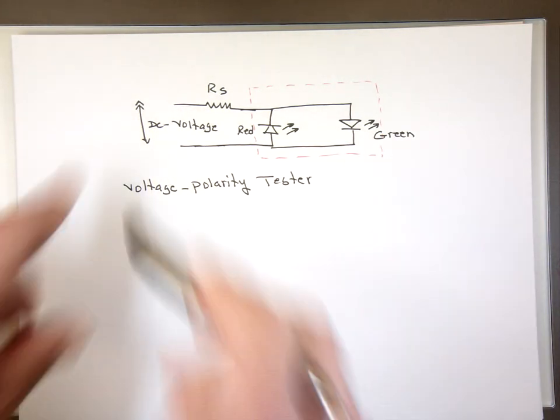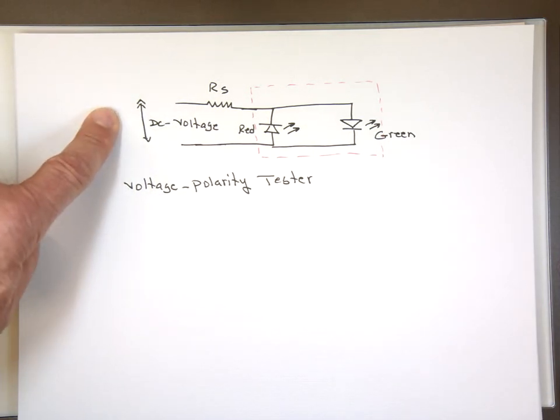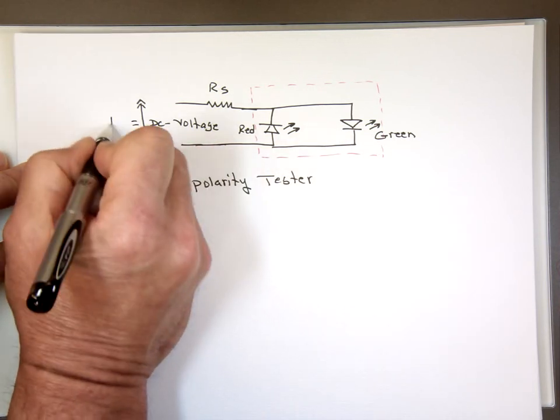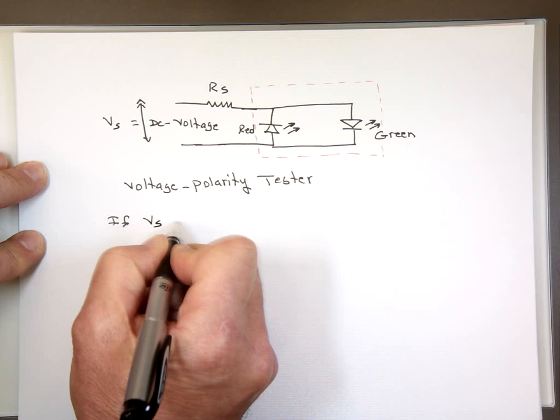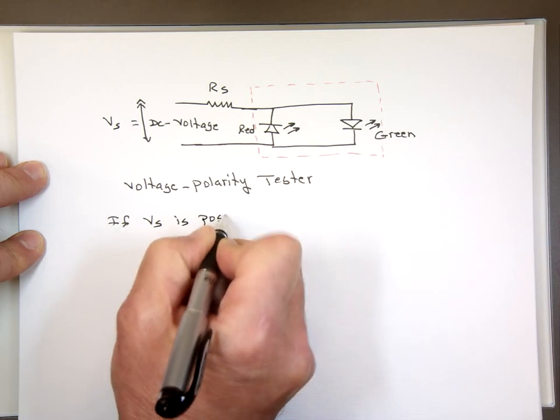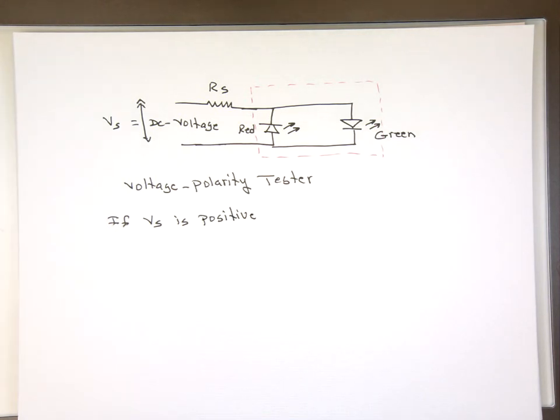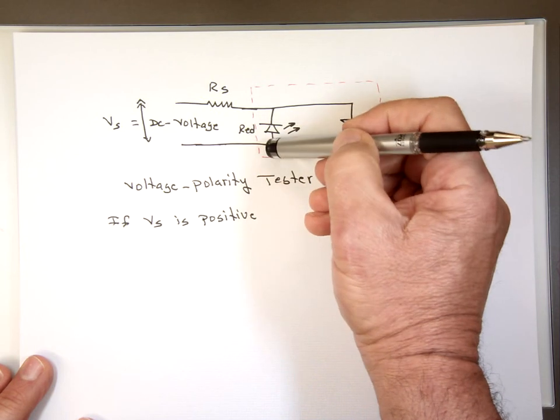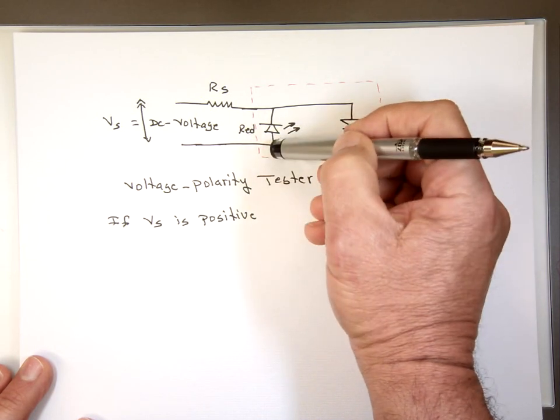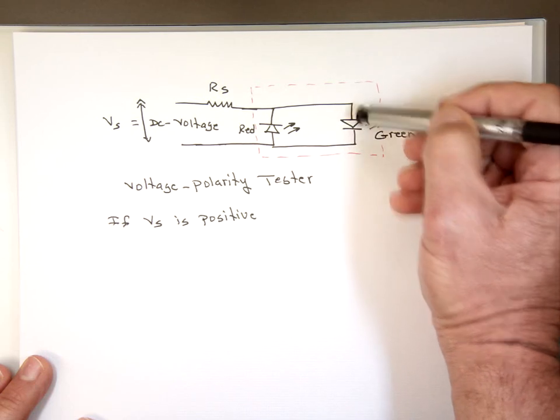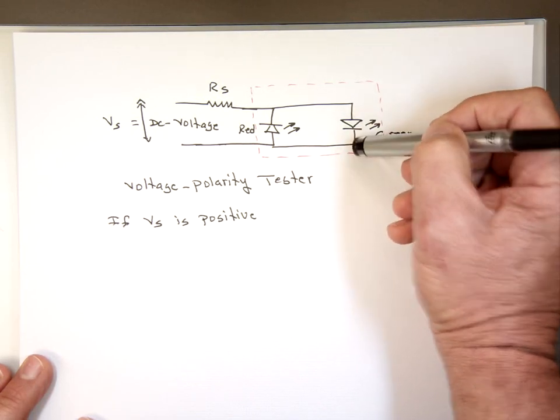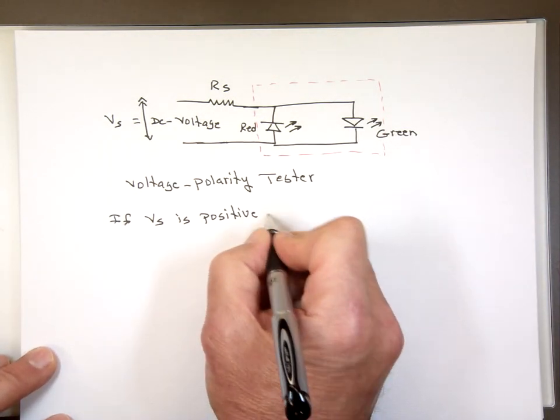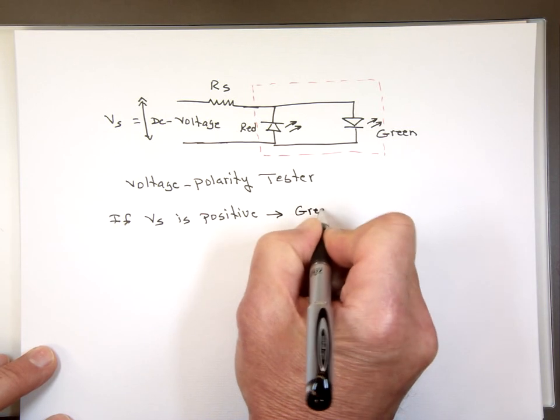This tells me if the voltage on this end is positive or negative. Why? If this voltage is positive, if... So let's write down. If... Let's call this VS here. If VS is positive, this actually will be in reverse bias, which means it will not be on. But this will be forward bias, which means current will go through it. And you will see the green light. So VS is positive, that means green light will be on.